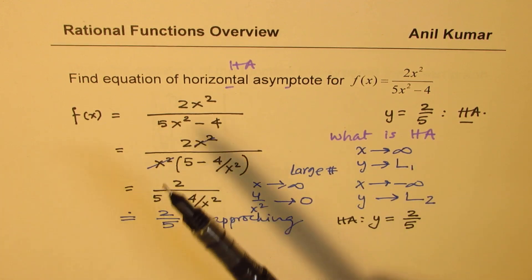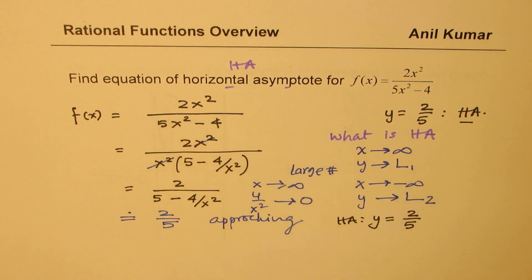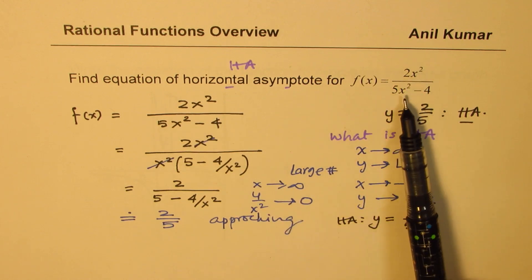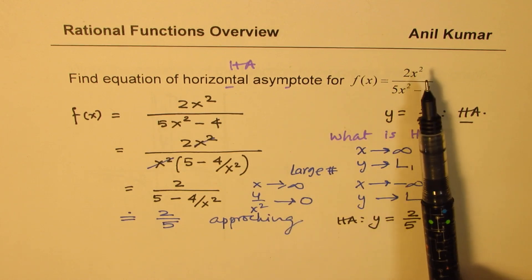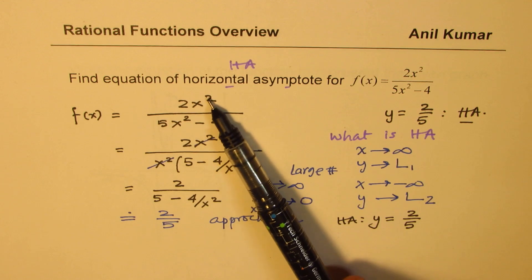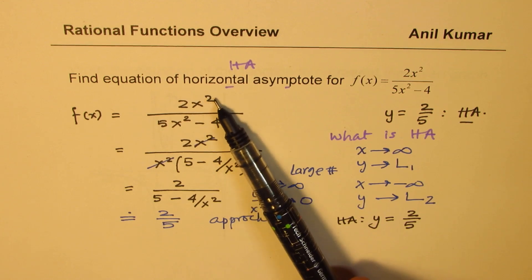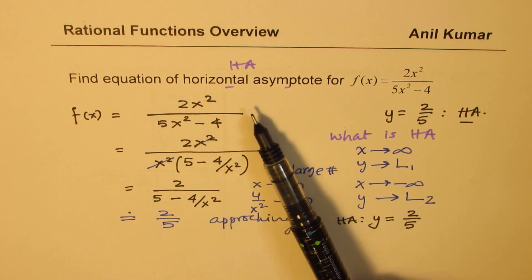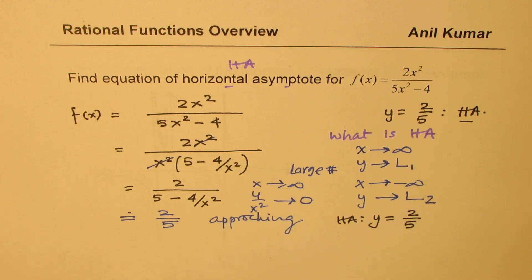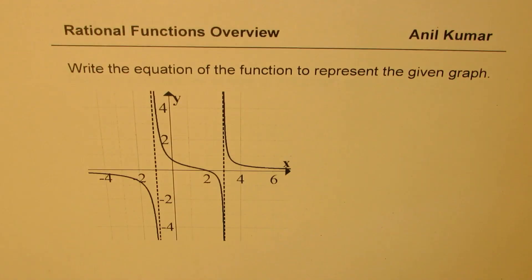There could also be a question where the degree of the denominator is higher than the numerator — for example if the numerator were just x. In that case, y equals 0 would be the horizontal asymptote. Now let's take the next question, which is one of the most difficult in the exercise: finding the equation of a rational function whose graph is given.